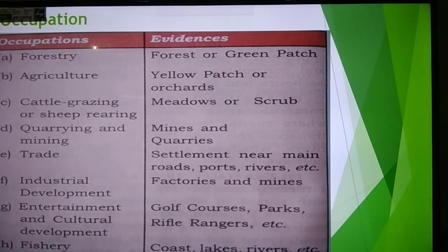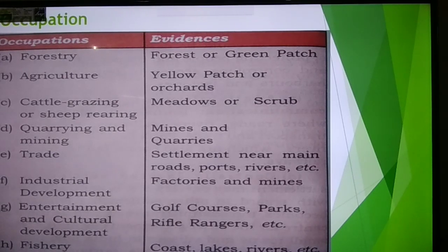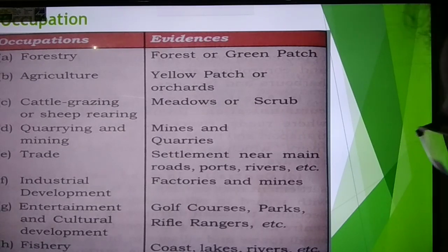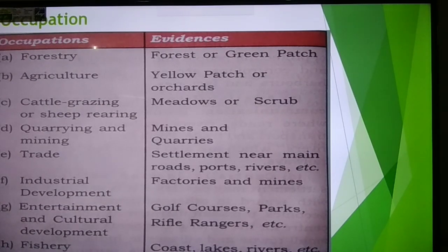A common question is: what are the occupations of the people living in the given topo sheet? We know there are no symbols to show occupation, but certain names like farm or orchard provide some evidences. If the presence of green color is found, it shows a forest region, and then the occupation is generally forestry, which includes lumbering, furniture making, or carpentry.